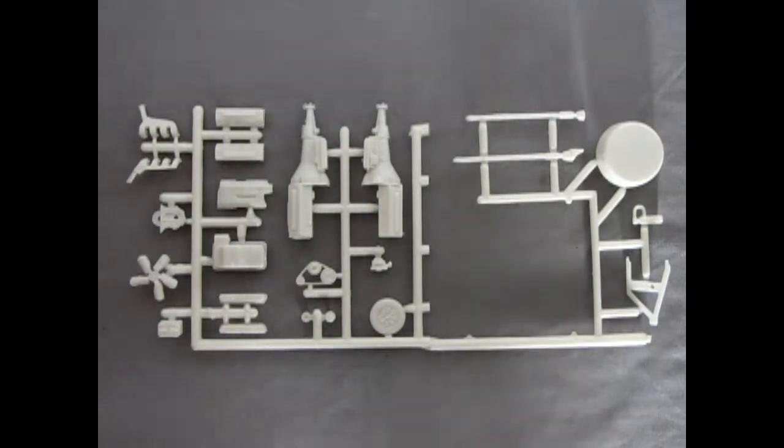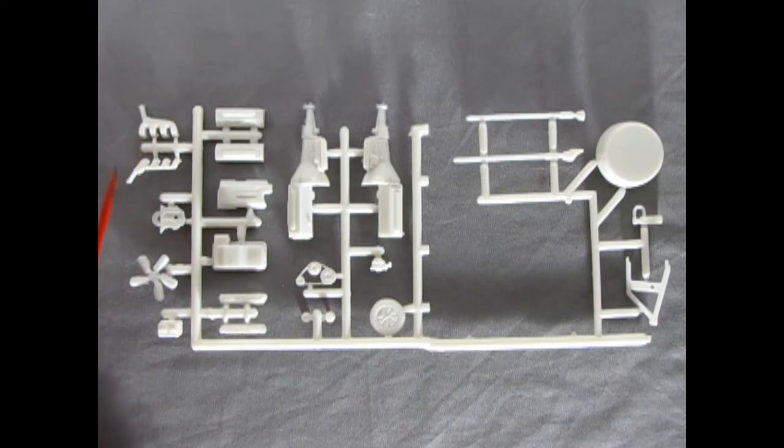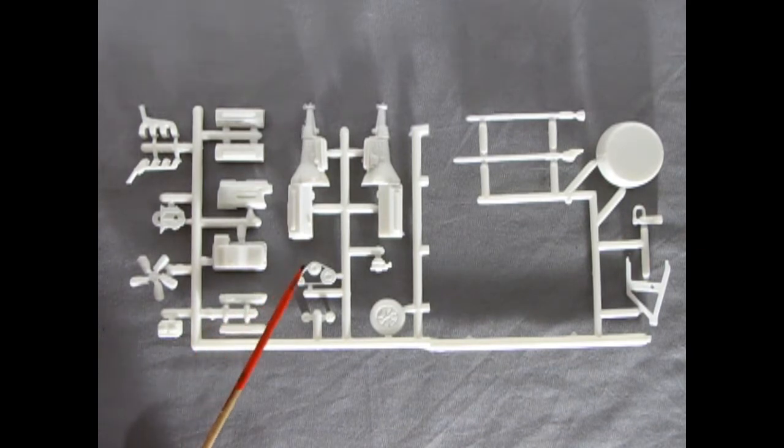Our next parts tree includes that amazing 351 Windsor motor and as you can see there's our cylinder heads, intake manifold, exhaust manifolds, timing cover, fan, oil pan, battery, valve covers, belts and the goodies. Air cleaner, carburetor.